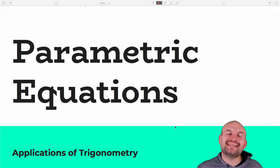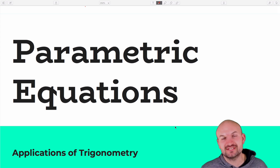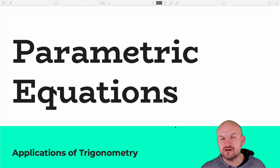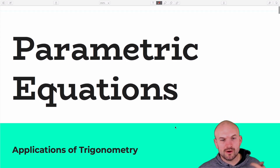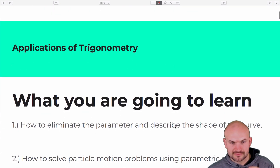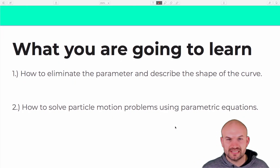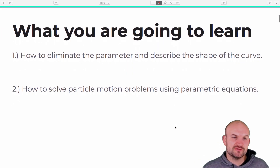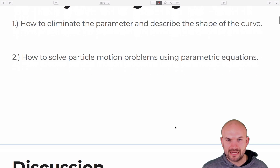Welcome, ladies and gentlemen. My name is Brian McLogan, and in this video we are going to work on parametric equations. This is the sixth lesson in our chapter for applications of trigonometry, and these are the exact same notes I gave to my students in the classroom. We're going to cover what parametric equations are, how to eliminate the parameter, and how to use parametric equations to solve word problems — specifically particle motion problems.